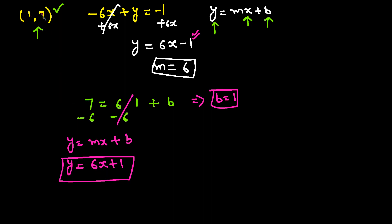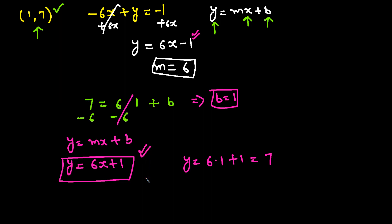We can verify: plugging in x = 1, we get y = 6(1) + 1 = 7. Since the point (1, 7) satisfies the equation, this is correct.